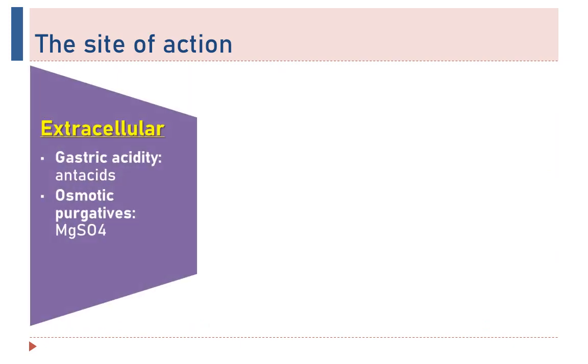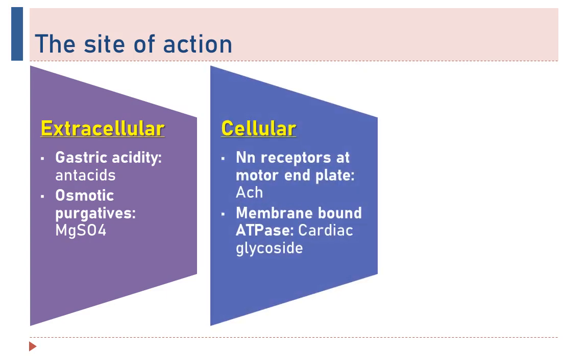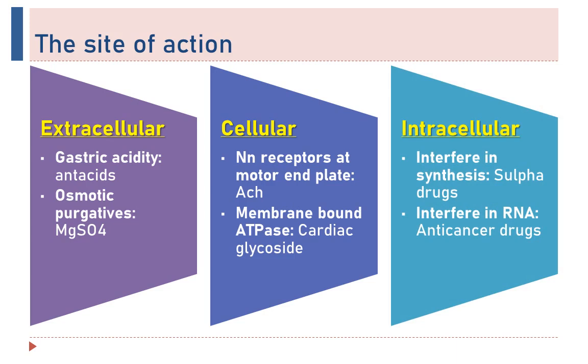Drugs may act at different sites. They act extracellularly, for example, antacids neutralize gastric acidity and magnesium sulfate acts as an osmotic purgative by retaining fluid inside the lumen of intestine. Some drugs act cellularly like acetylcholine on nicotinic receptors of motor end plate leading to contraction of skeletal muscles and inhibition of membrane-bound ATPase by cardiac glycosides. Some drugs act intracellularly like sulfa drugs or trimethoprim that interfere in the synthesis of folic acid. Anti-cancer drugs interfere in messenger RNA transmission.